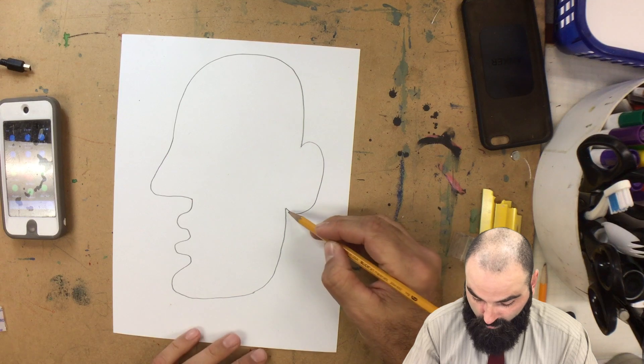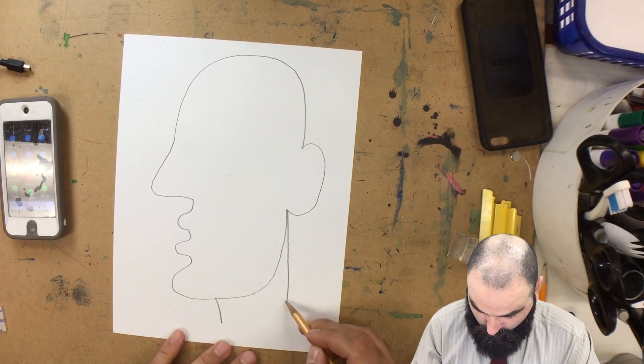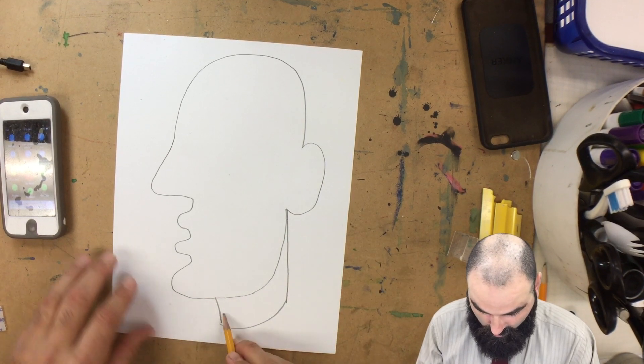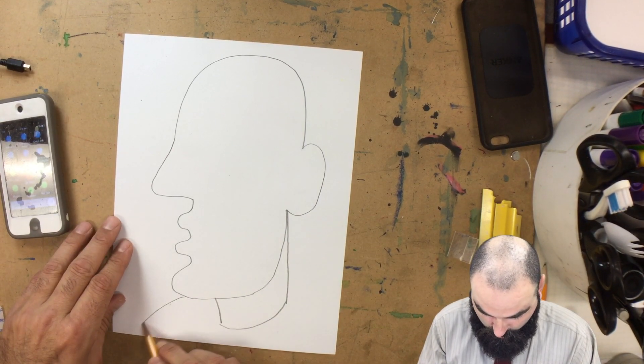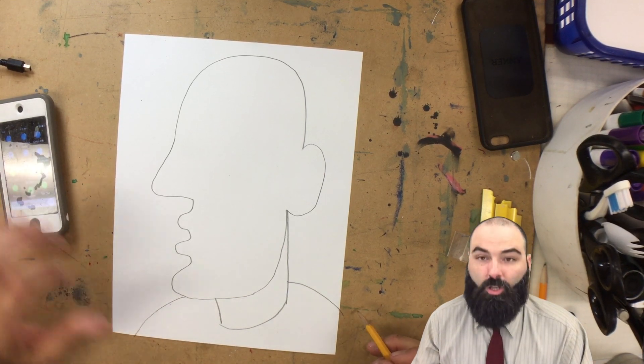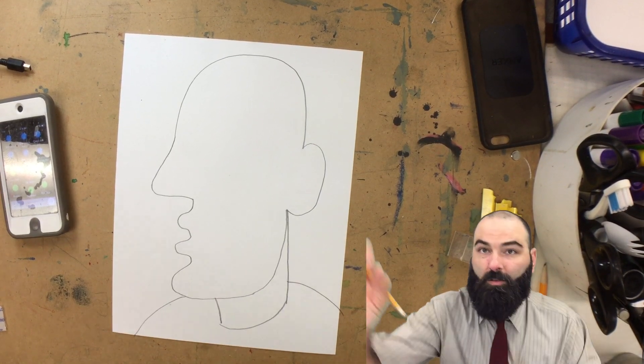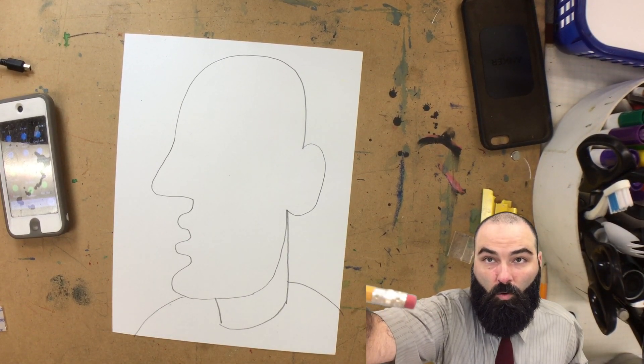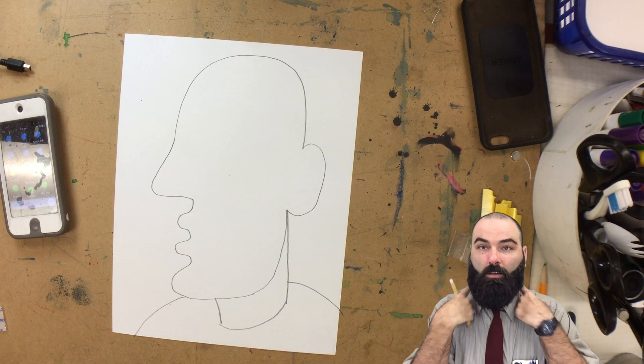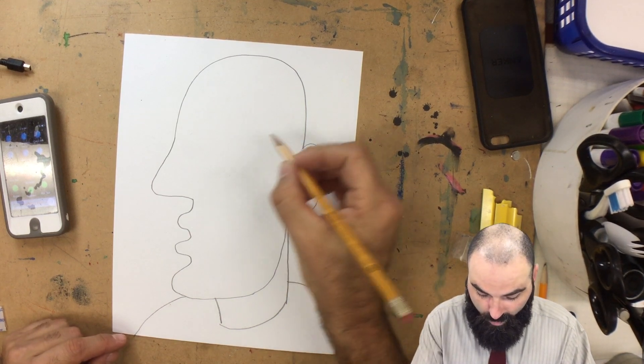Next step, we're going to draw the neck. So just two lines coming down the neck and then add shoulders. Shoulders, not soldiers. Soldiers are the ones that go out into the world and fight for freedom. Shoulders are what your head is resting on, your head and your neck.